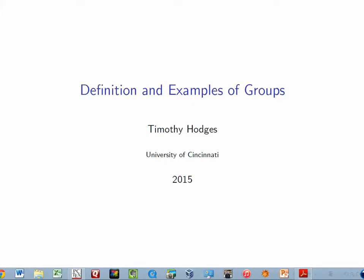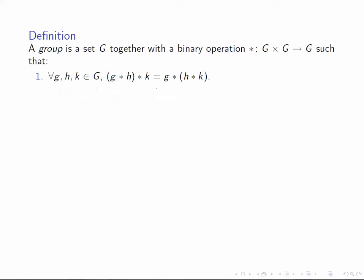Definition and basic examples of groups. A group is a set equipped with a binary operation, a way of combining elements of G. It's a function from G cross G to G such that first of all this operation is associative.